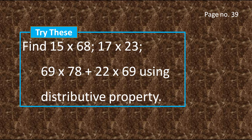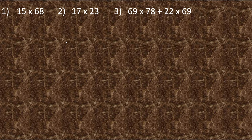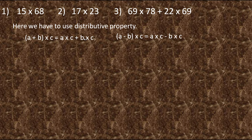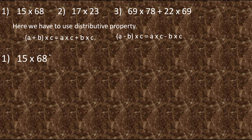On page number 39 you have one more 'Try This' box with three equations which we have to solve with the help of distributive property. We are going to use distributive property, which says that we can distribute the multiplier with each number and then do the operation. Let's take the first equation. Distributive property says we can split one of the numbers — let's split 68 into 70 minus 2, giving us 15 into (70 minus 2).